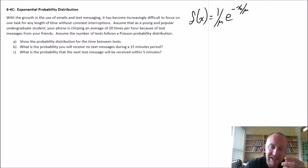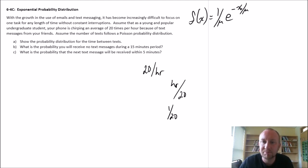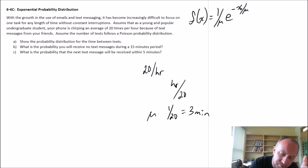There's different ways we can go about doing it. 20 times per hour is my average number of texts. So if I'm getting 20 texts per hour, it means that the average time—this is 20 per hour—the average amount of time between them, I'm taking the reciprocal, is going to be hours over 20 or 1/20th of an hour between each text. If I get 20 texts in one hour, then the average amount of time between texts is 1/20th of an hour, which happens to be 3 minutes. So there's my mu. This is 1/20th of an hour, which is 3 minutes. So this then becomes 1 over 3 e to the negative x over 3.